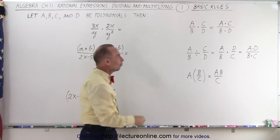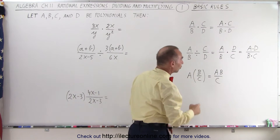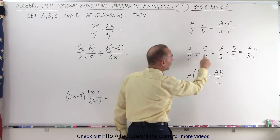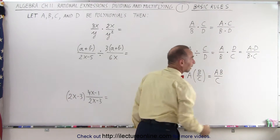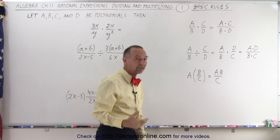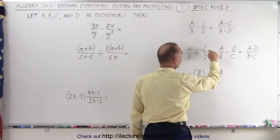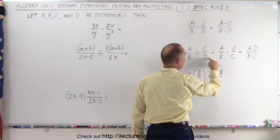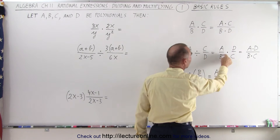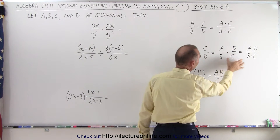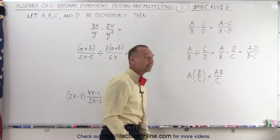Now if we have one rational expression divided by another rational expression, we can turn that into multiplication by taking the inverse of the second rational expression. So instead of c over d, we have d over c — we turn the division into multiplication and use the first rule.